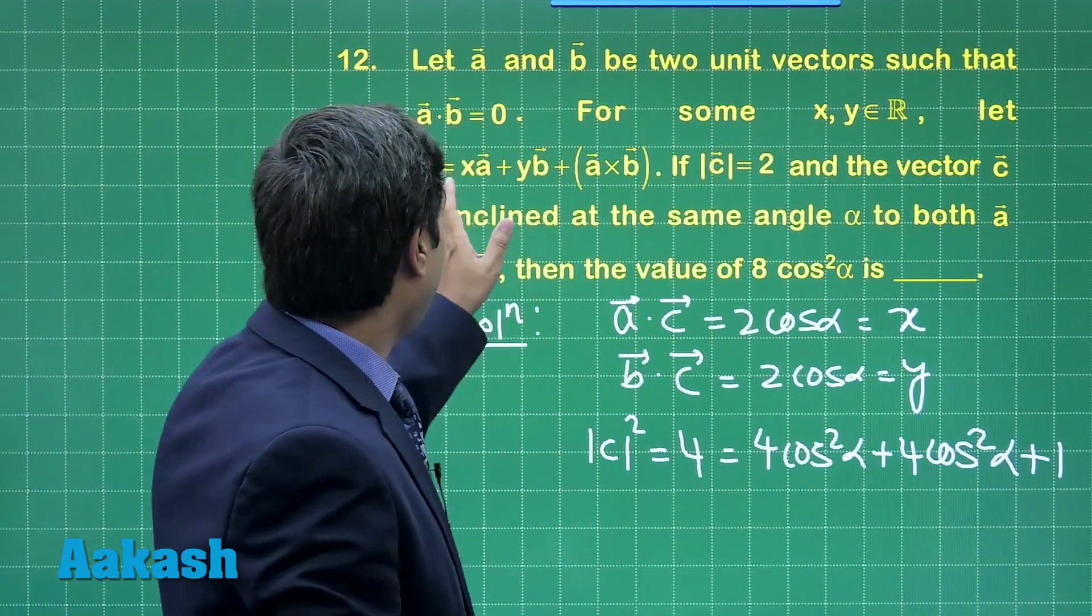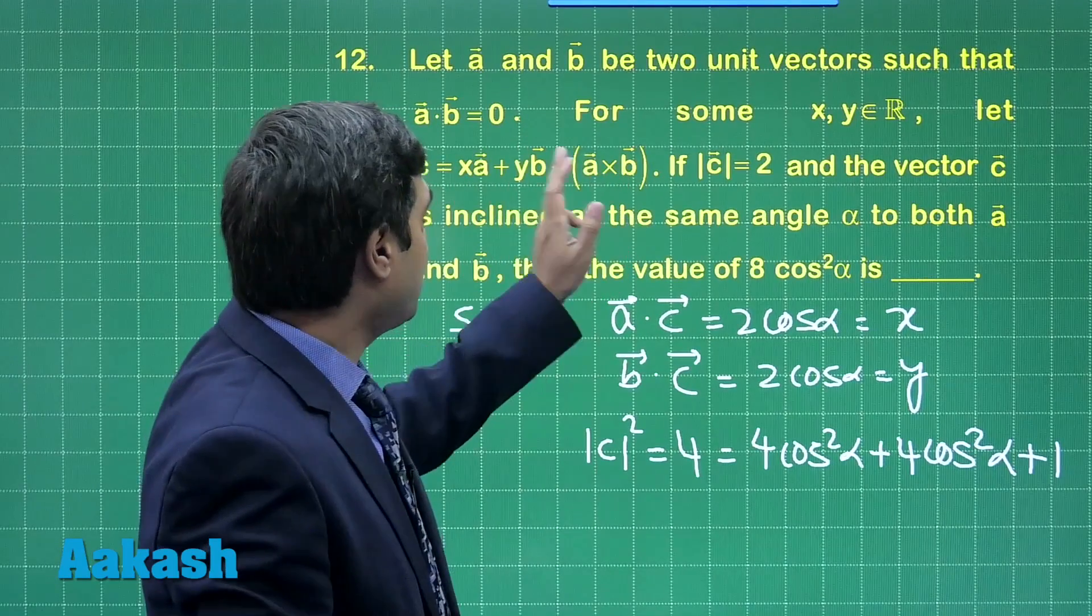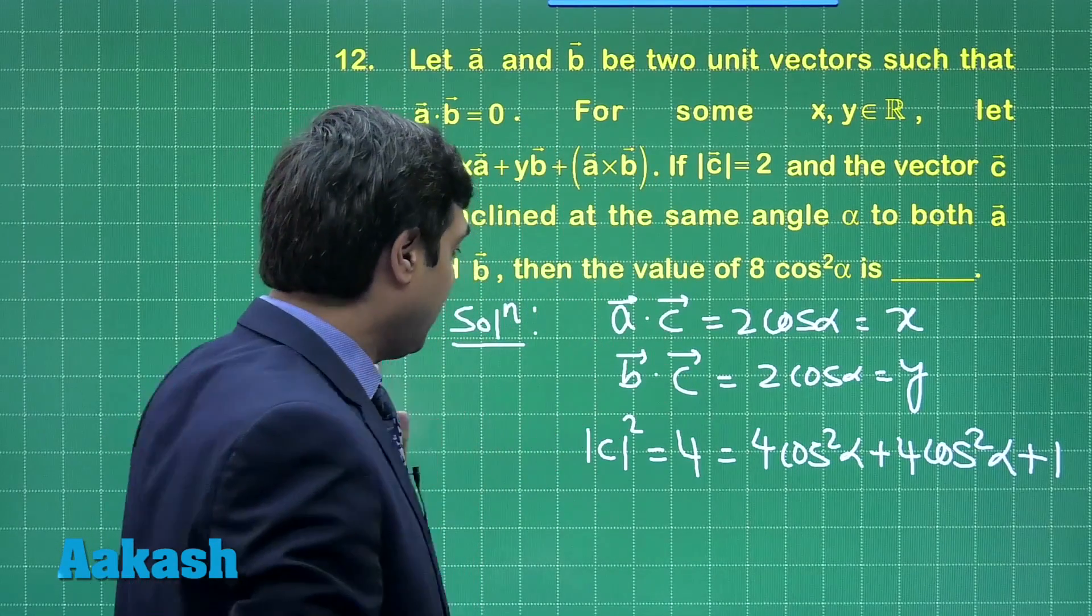Plus twice of rest of the terms would become 0, as a dot b, a dot a cross b, b dot a cross b, all will become 0.